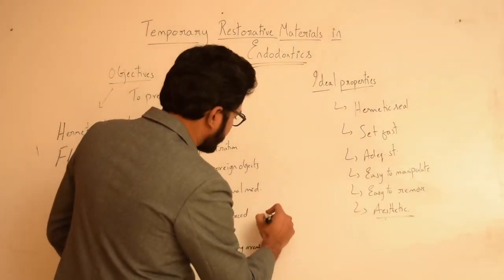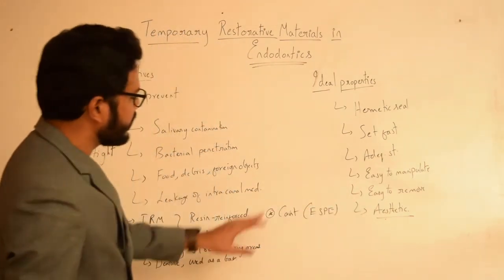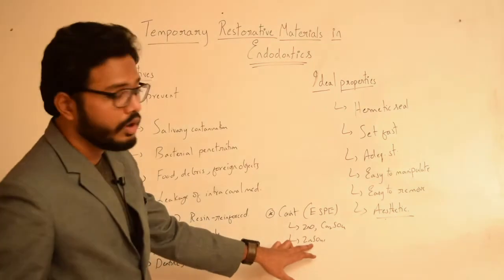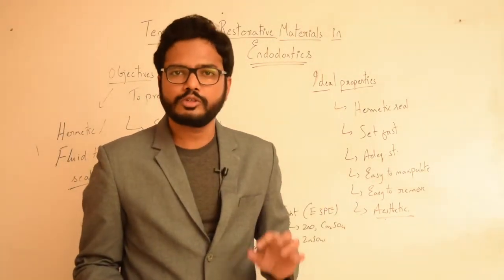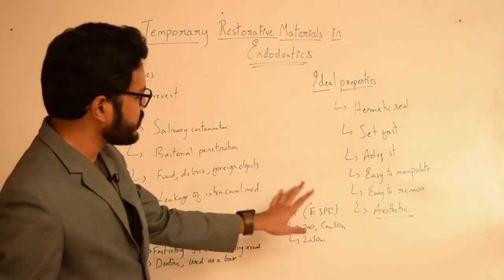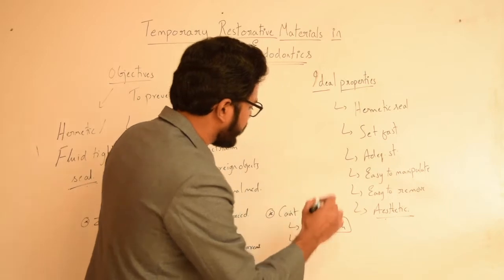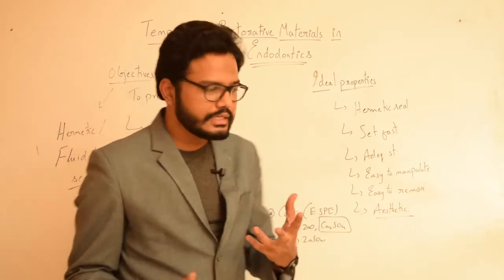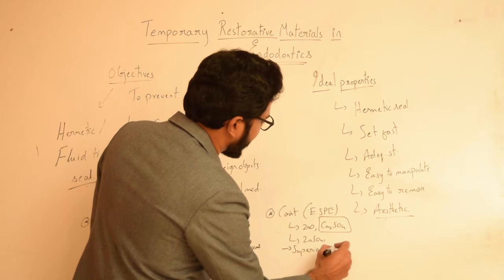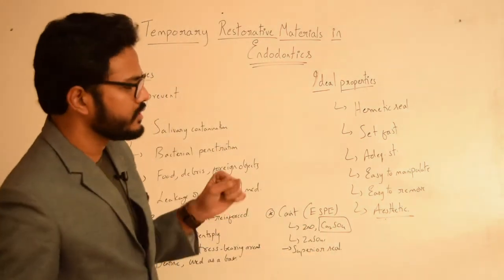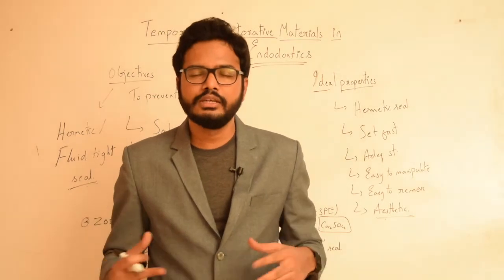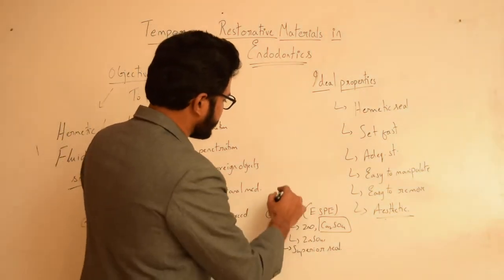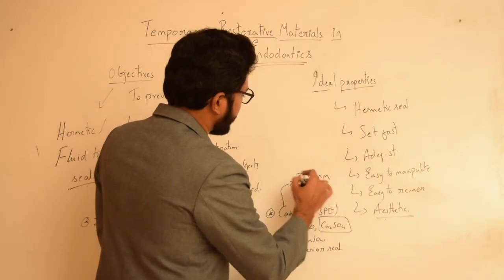Coming to another material called Cavit, supplied by ESPE — Cavit is a temporary restorative material which contains mainly zinc oxide, calcium sulfate, zinc sulfate, triethanol amine, polyvinyl acetate resin, and glycol acetate. Since it contains calcium sulfate, it absorbs moisture and swells. Because of this swelling, there will be a superior seal of the material. The superior seal of Cavit is attributed to the hygroscopic nature of calcium sulfate, which absorbs moisture and swells, providing adequate seal to the access cavity. However, the drawback is that it has to be placed in a minimum thickness of 3.5 mm.